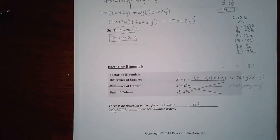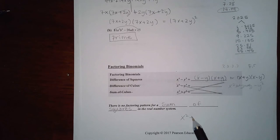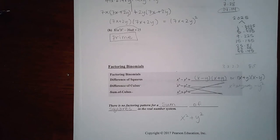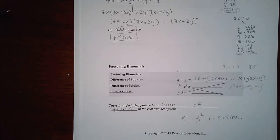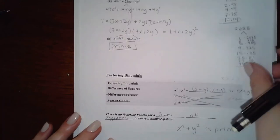Now notice that there is no factoring pattern for a sum of squares. So if you get something like this, you cannot factor it. This is prime. Don't even bother trying, it's not gonna work.